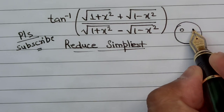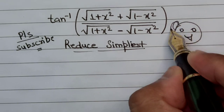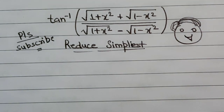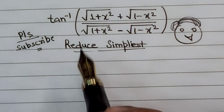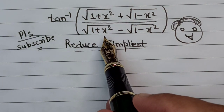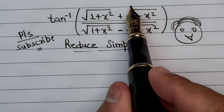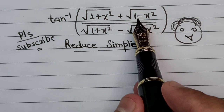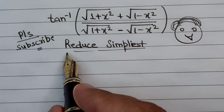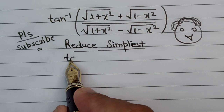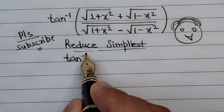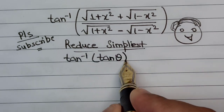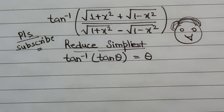So let's start the solution of this problem with a big smile on the face. The very first task is to reduce the expression inside the bracket in terms of tan θ, because we know that tan inverse of tan θ can be taken as θ.